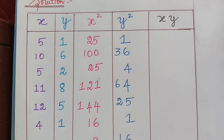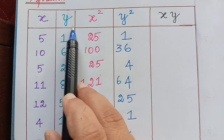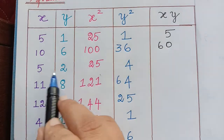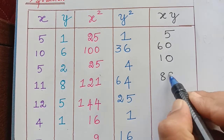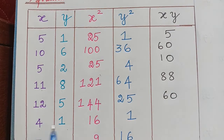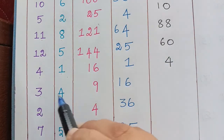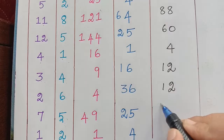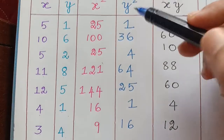We have found all values of X squared and Y squared. Next we find XY by multiplying the corresponding values of X and Y: 5×1=5, 10×6=60, 5×2=10, 11×8=88, 12×5=60, 4×1=4, 3×4=12, 2×6=12, 7×5=35, 1×2=2. So we have now found X squared, Y squared, and XY.